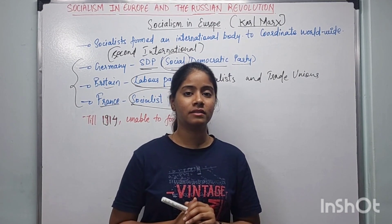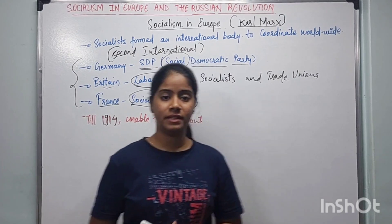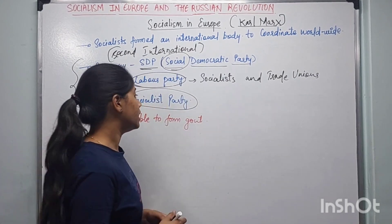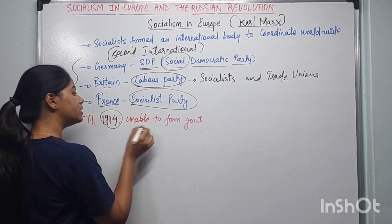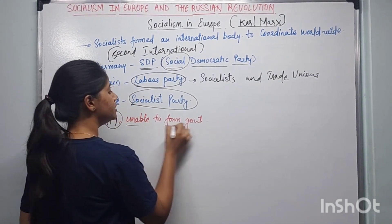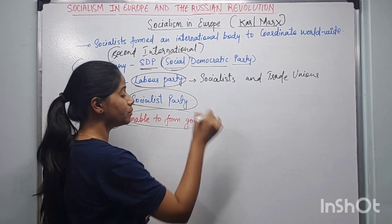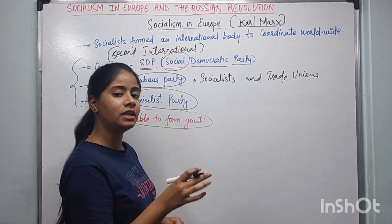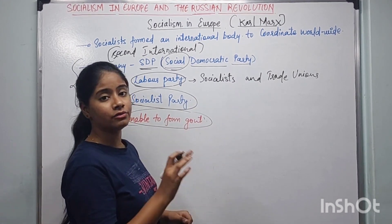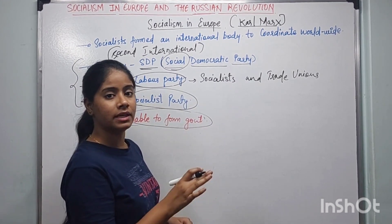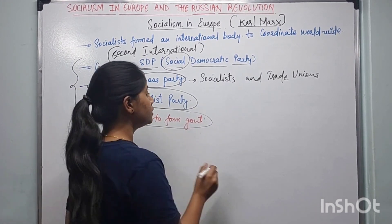Until 1914, the socialist people were unable to form the government in any country of Europe.